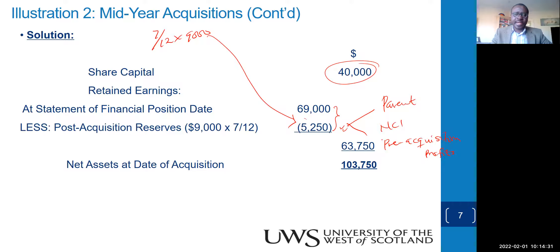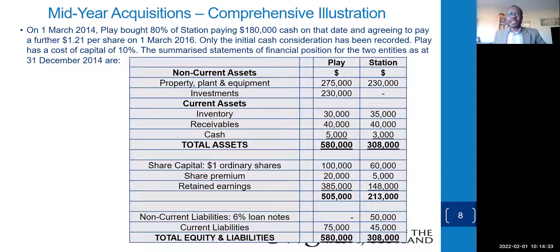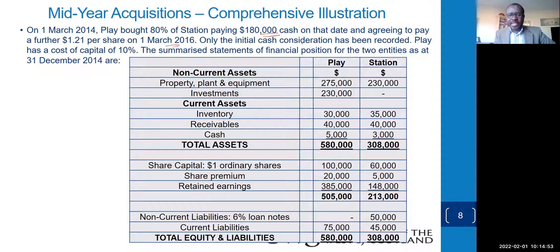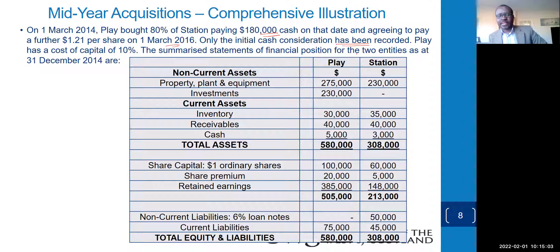Detailed comprehensive example: on 1st March, Parent bought 80% for cash and agreed to pay 1.21 per share on 6th March two years later — this is deferred consideration. Only the initial cash consideration has been recorded; the deferred cash payment has not been recorded. The cost of capital is 10%. The summarized statement of financial position is as shown.